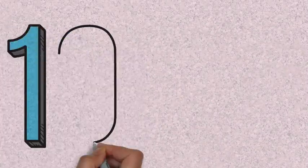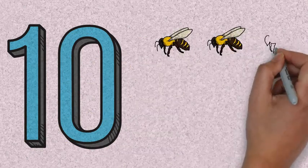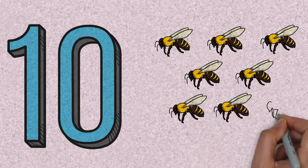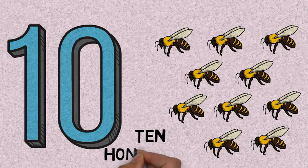Ten. One, two, three, four, five, six, seven, eight, nine, ten. Ten honeybees.